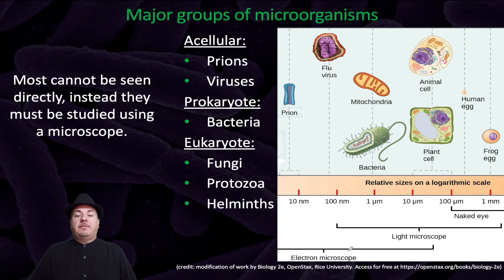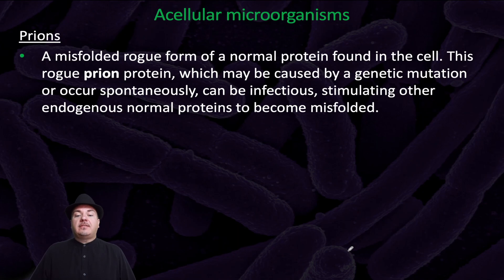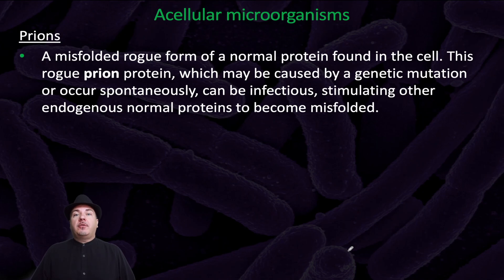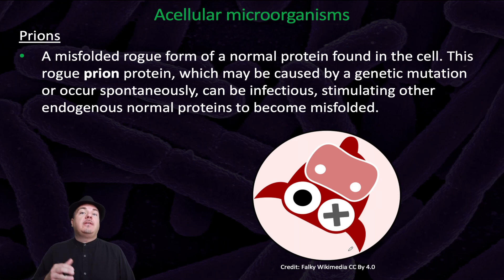Now let's go into the details of the different types of microorganisms, starting with the prions. Prions are a misfolded, rogue form of a natural protein found in the cell. This rogue prion protein, which may be caused by genetic mutation or occur spontaneously, can be infectious, stimulating other endogenous normal proteins to become misfolded. One well-known example is bovine encephalitis, or mad cow disease, which can affect cows and humans who eat infected cows.